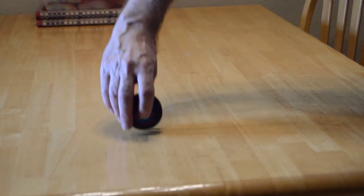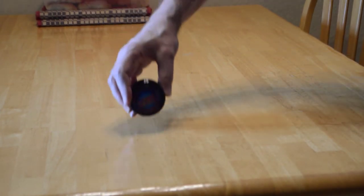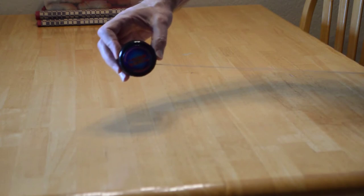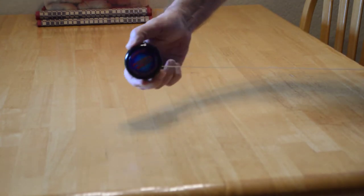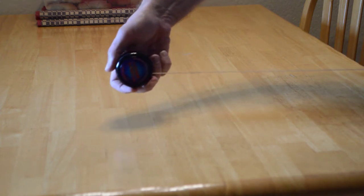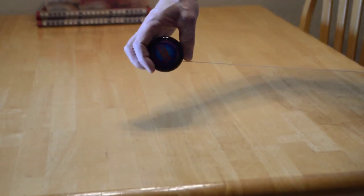So if I set this on the table and I pull the string, what direction will the yo-yo move? Will the yo-yo tend to unwind like this and move to the left, or will the yo-yo move to the right and tend to wind up? Think about that for a second and then I'm going to try it and see what happens.